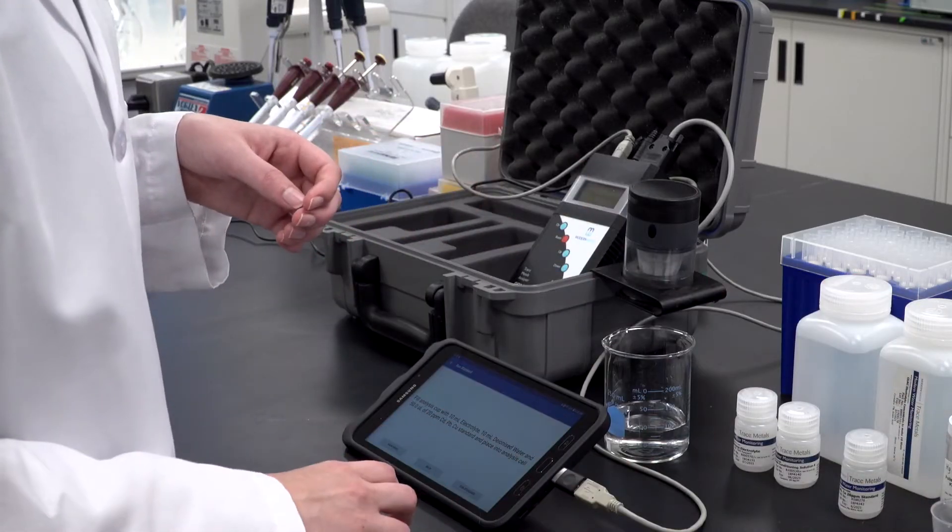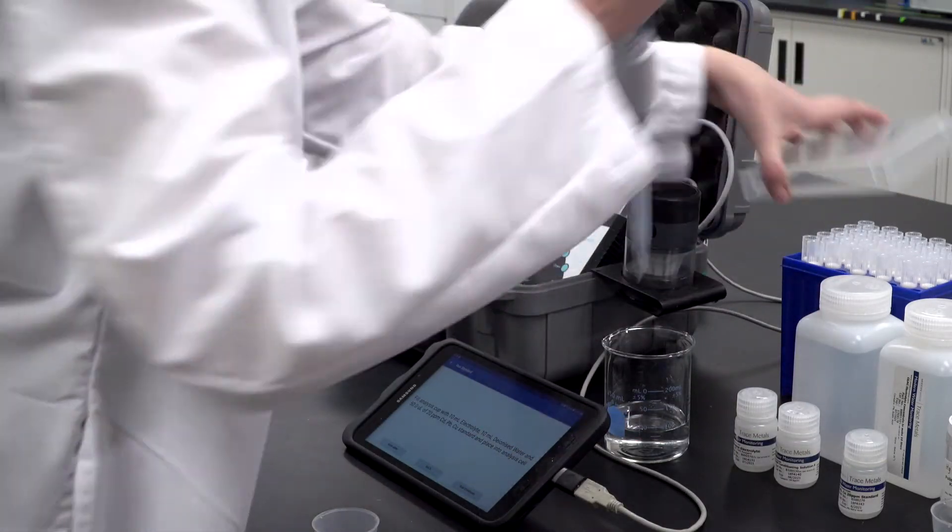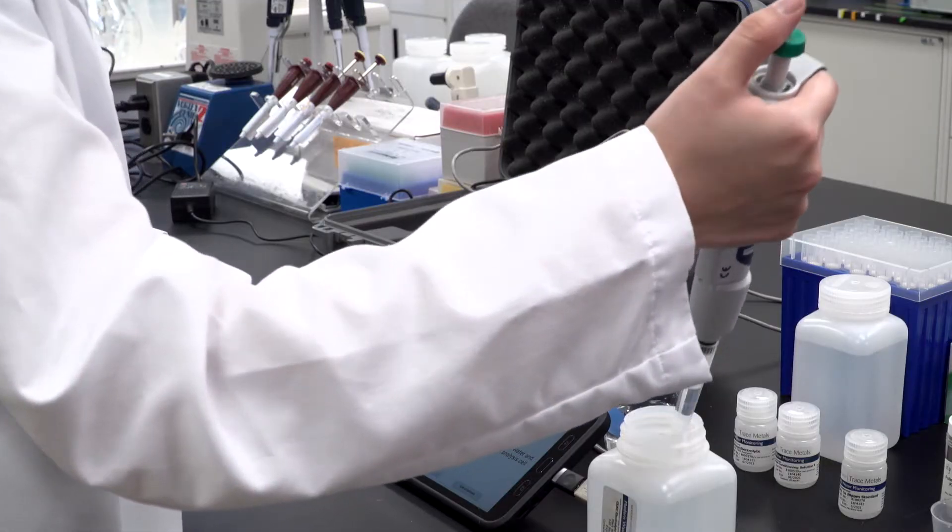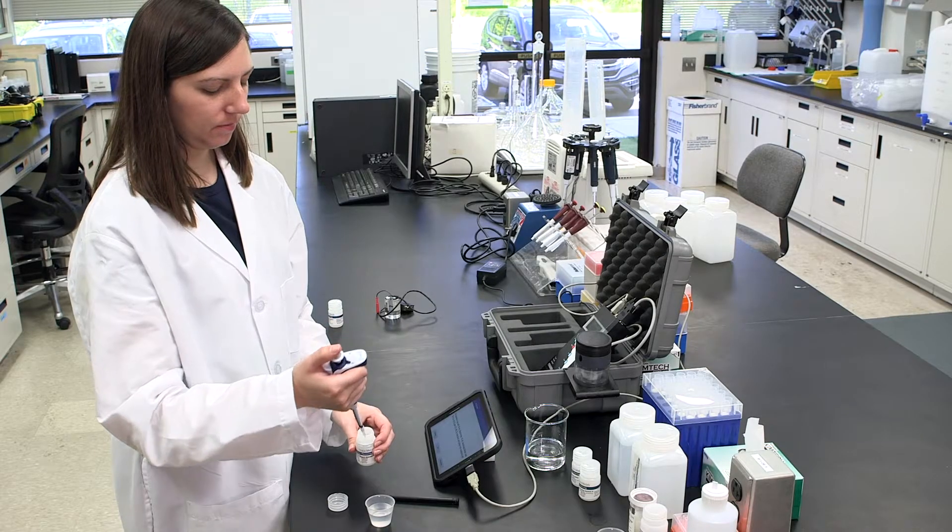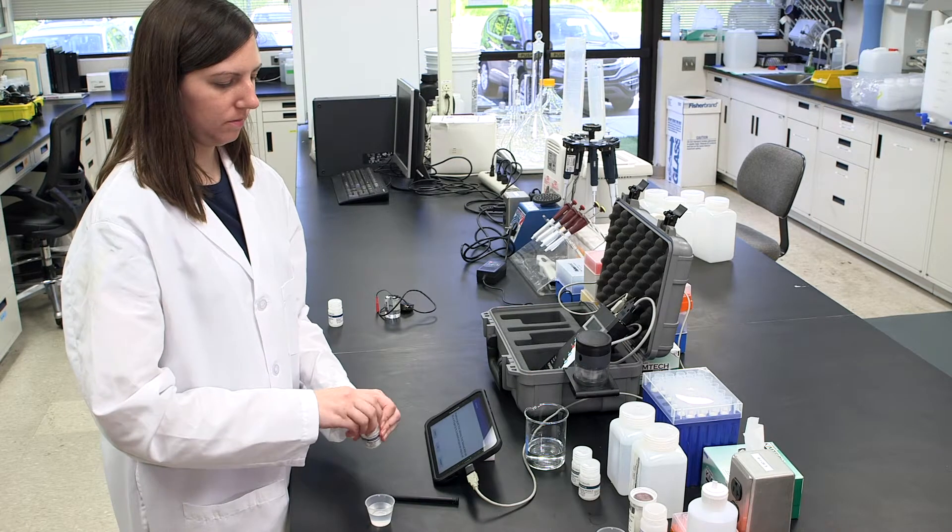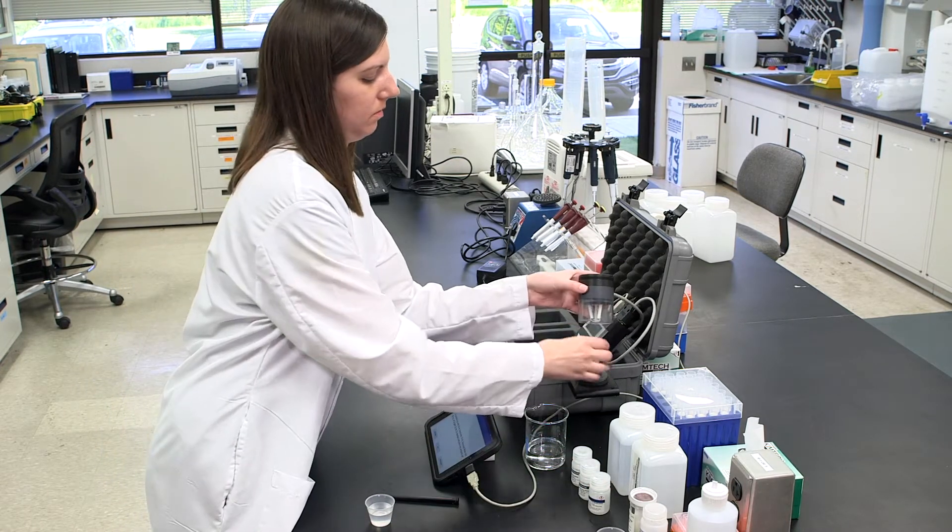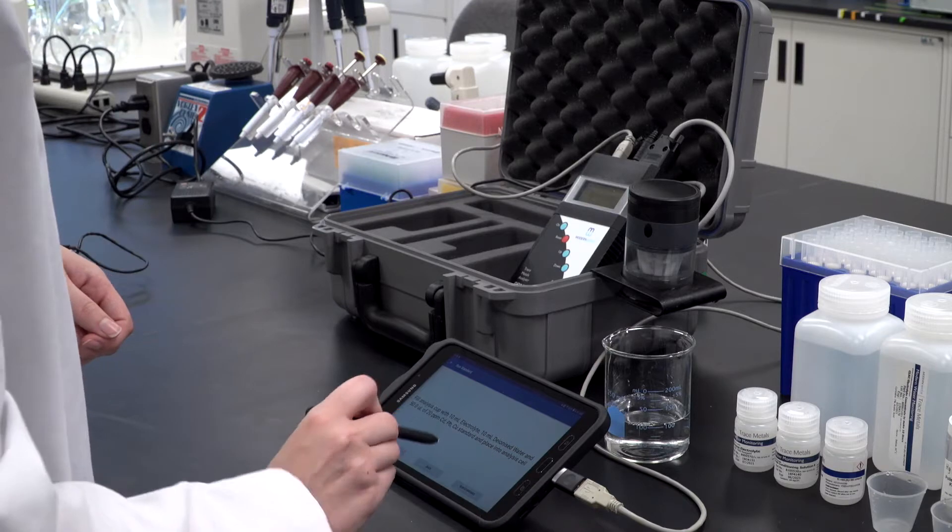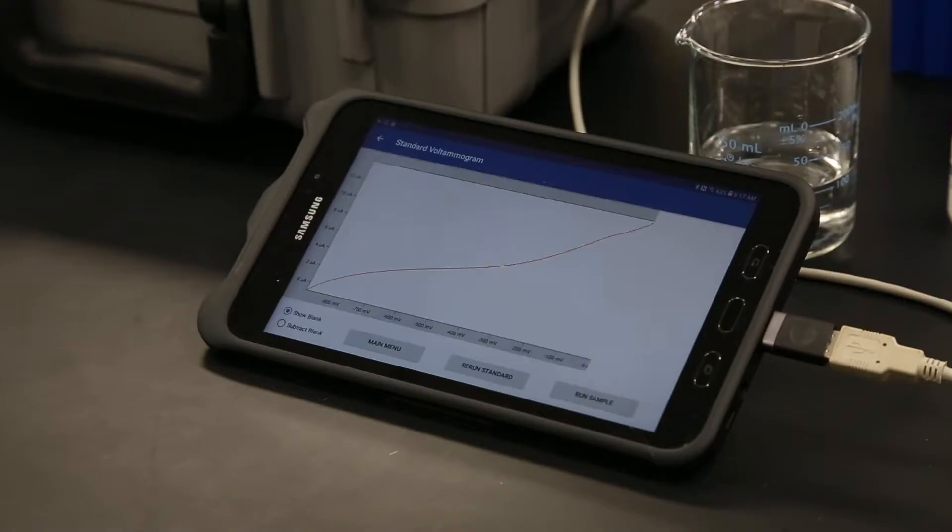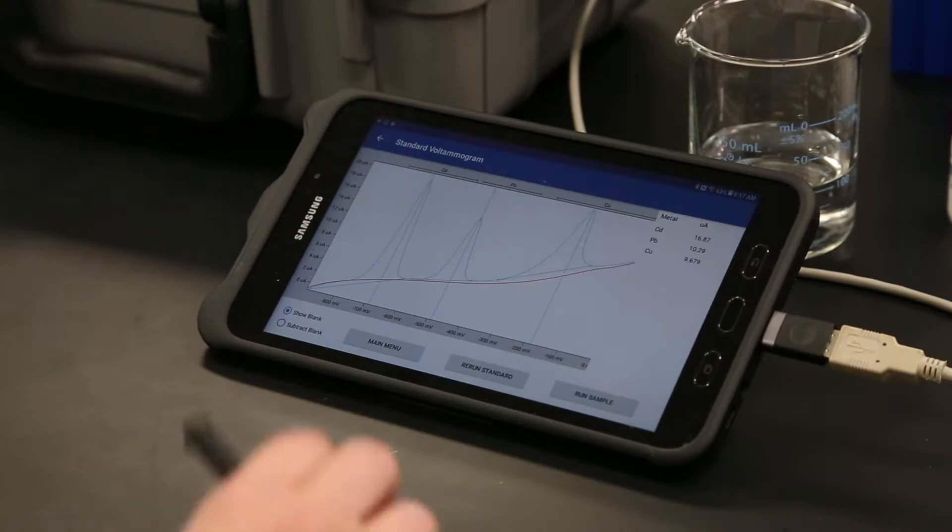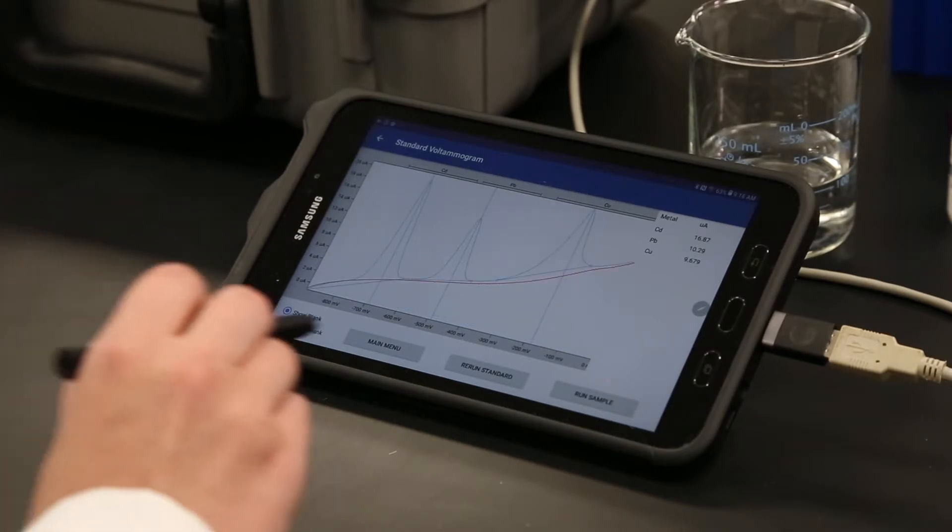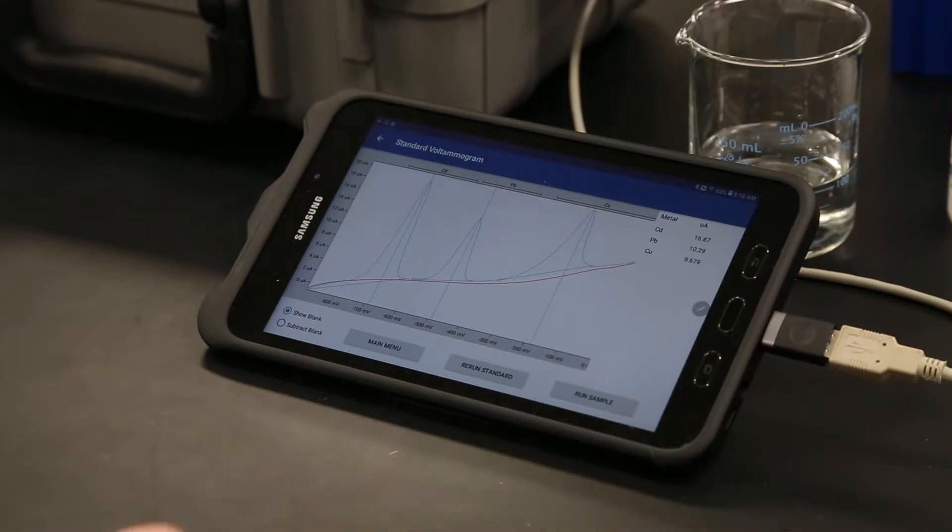In a fresh analysis cup, prepare a standard solution from the volumes given on the app screen. Place the cup in the analysis cell and click the Run Standard button to initiate the standard analysis. Once the analysis has been carried out, the voltammogram will be displayed. The user will have the option to simply display the blank or utilize the blank subtraction option by clicking the appropriate radio button in the bottom left corner. If the application note recommends repeating the standard for better results, this can be done using the Rerun Standard button.